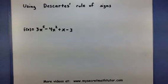So, for this one, I have 3x to the fifth minus 4x squared plus x minus 3. Now, the key for using Descartes' Rule of Signs is really to just count up the number of sign changes in the polynomial.